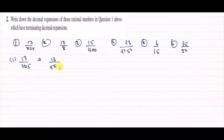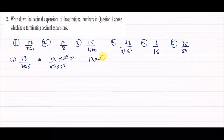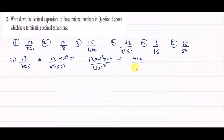Now, if we have 5 to the power 5 in the denominator, we multiply both numerator and denominator by 2 to the power 5. So we get 13 multiplied by 2 to the power 5, divided by 5 to the power 5 multiplied by 2 to the power 5, which gives us 13 into 32 divided by 10 to the power 5. When we multiply: 13 times 32 gives 416, divided by 10 to the power 5.